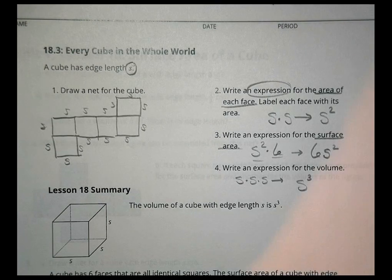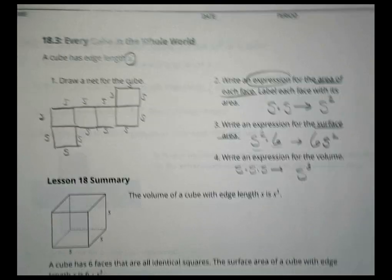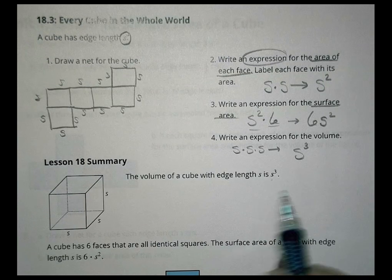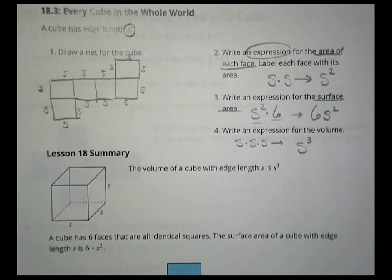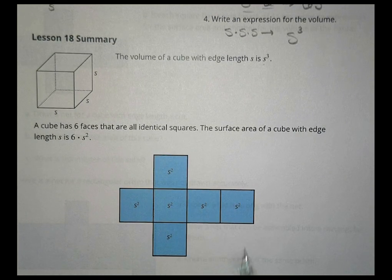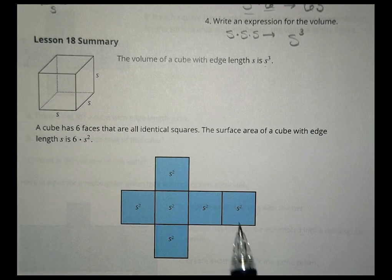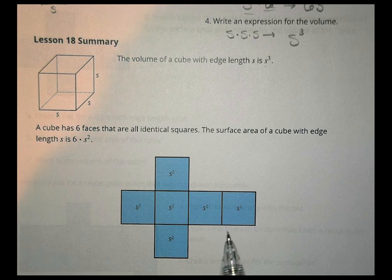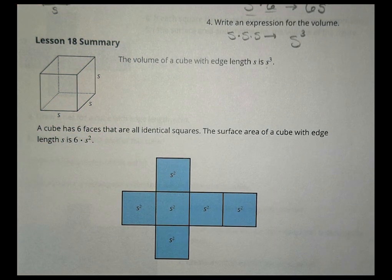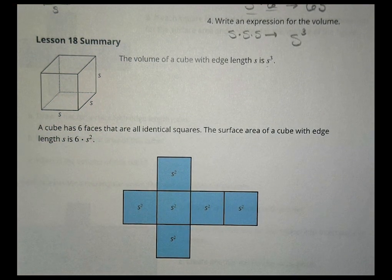In summary: the volume of a cube with edge length S is S cubed. A cube has six faces that are all identical squares, so the surface area is 6 times S squared. That's the net they drew — it doesn't quite match mine, but the formulas are the same. Let's pause there and work on the homework. We'll check it in just a minute.